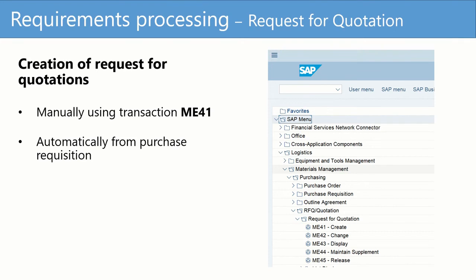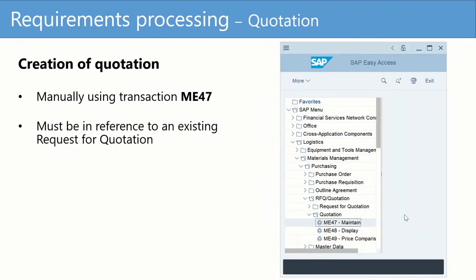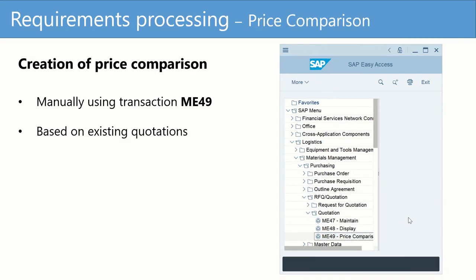After an RFQ has been created and the quotation has been received, we can create the quotations manually in the system using transaction ME47. The quotations must be in reference to an existing request for quotation — it is not possible to create a quotation that is not linked to an RFQ. After that, we can compare the quotations using transaction ME49, based on the existing quotations recorded in the system.